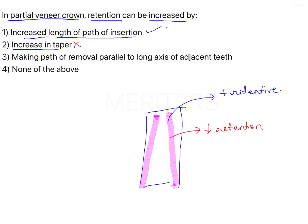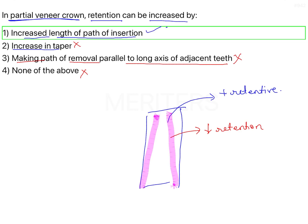Making path of removal parallel to long axis of teeth—this is done ideally for full coverage crowns, not for partial veneer crowns. This is incorrect. And none of the above, so that is incorrect. The correct answer is option one, by increasing the length of path of draw—making sure that the walls are a little longer and you have more resistance for the crown to pop over. The correct answer is one.